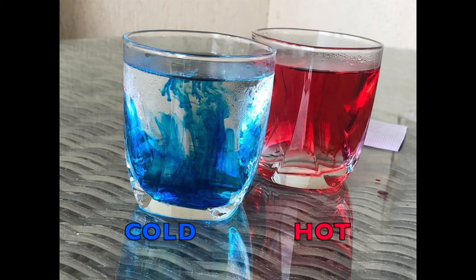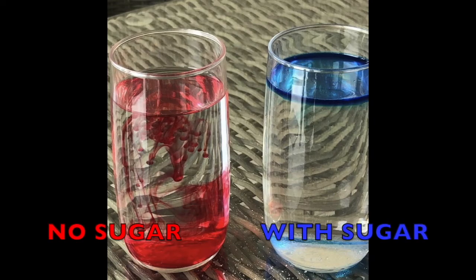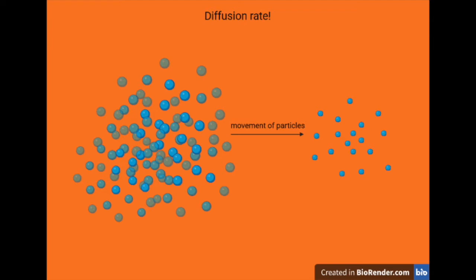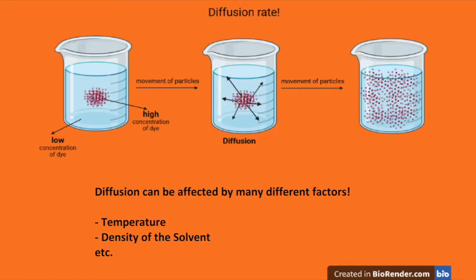So why is the hot water becoming fully colored faster than the cold water, and why is the water without sugar becoming fully colored faster than the water with sugar? This is due to the diffusion rate. The diffusion rate is the movement of particles from an area of high concentration to an area of low concentration — from an area where there are lots of particles in a given space to an area where there are fewer particles in that space. Once the drop of color reaches the water, we have a spot of color with a very high concentration of dye compared to the rest of the water, which has a very low, almost zero concentration of dye. Therefore, the particles of the dye will diffuse from the area of high concentration — the drop of dye — to areas of low concentration, which is the rest of the water.